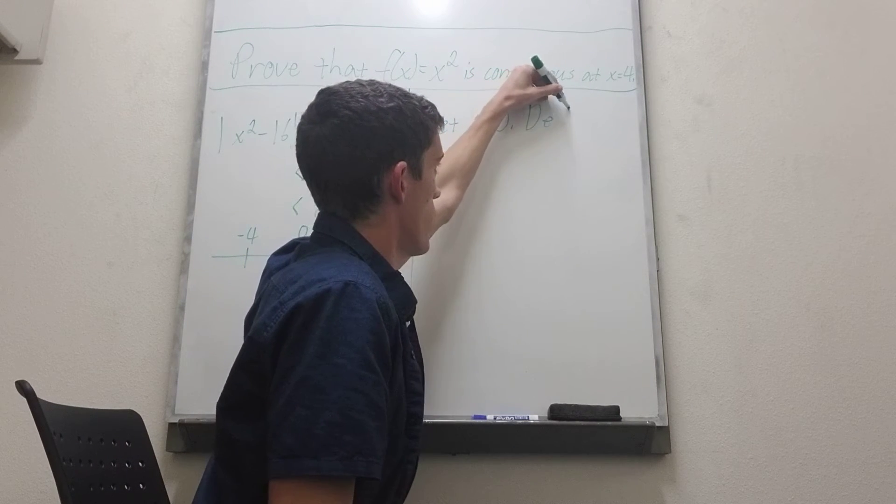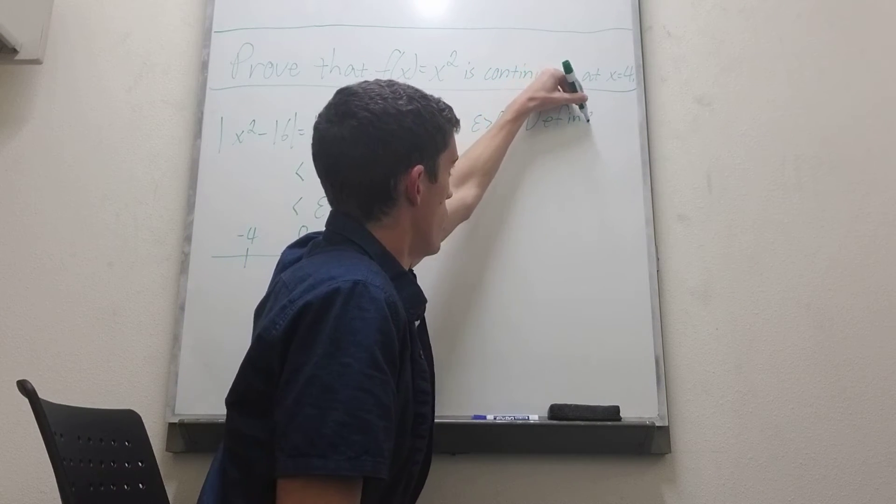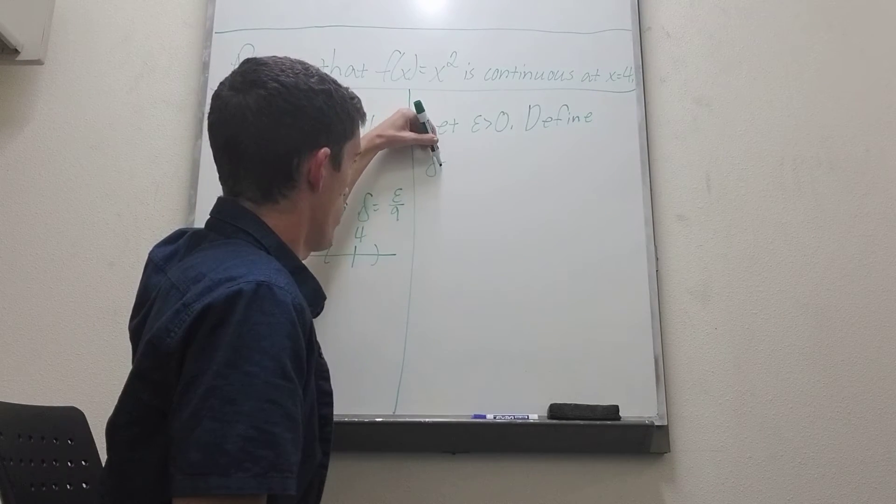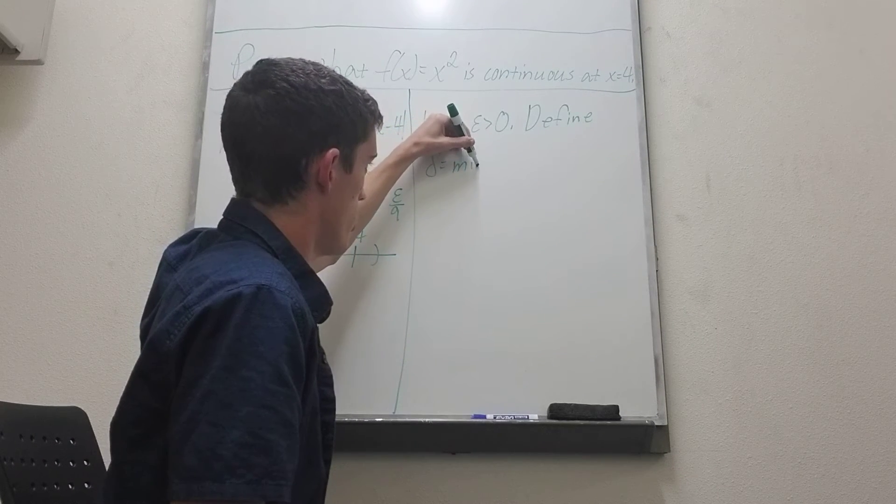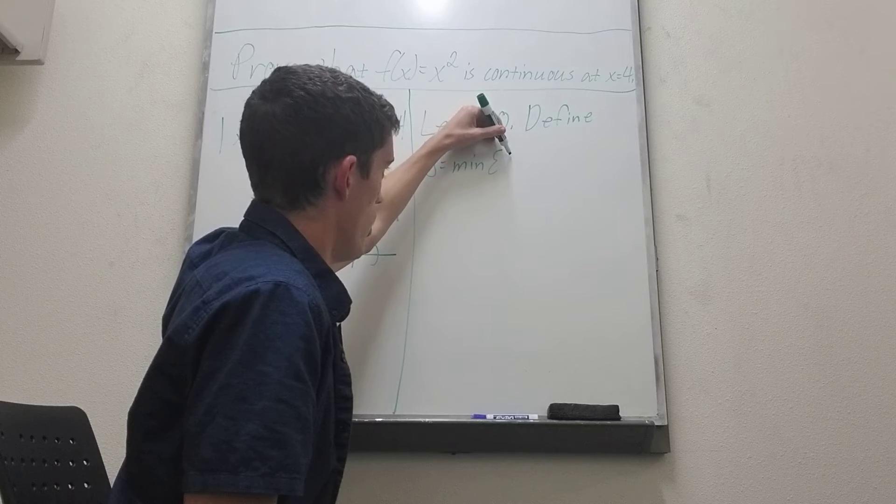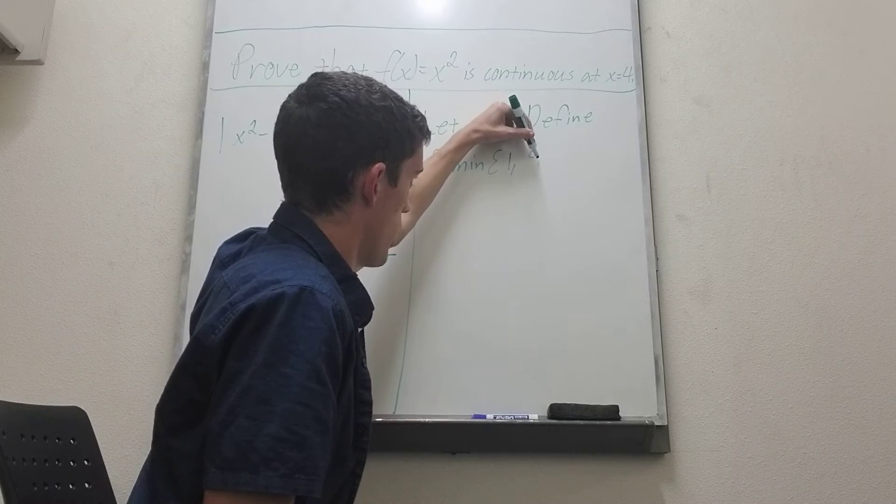So we're going to define our delta to be equal to the minimum of 1 and epsilon over 9.